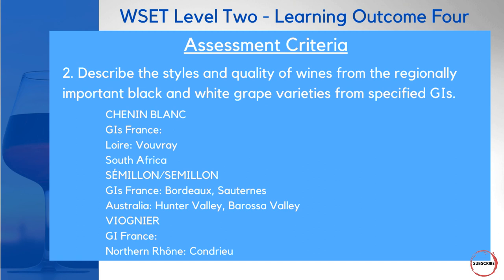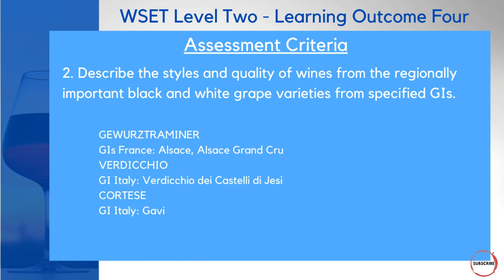Moving on to the whites: Chenin Blanc from the Loire or South Africa, where it's also known as Steen; Semillon from Bordeaux, Sauternes, and Australian regions like Hunter Valley and Barossa Valley; Viognier from the Northern Rhône; Gewürztraminer from Alsace; and Verdicchio and Cortese to round out the white grapes. Questions will ask you to identify what's important in the grape characteristically, and also to recall specific regions — for example, 'this area produces which grape?'